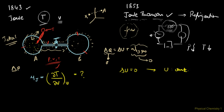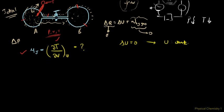We have μ_J defined as this. Let's come back to what we saw earlier—we saw that C_p minus C_v is defined as (∂U/∂V)_T plus P times (∂V/∂T)_P, right?